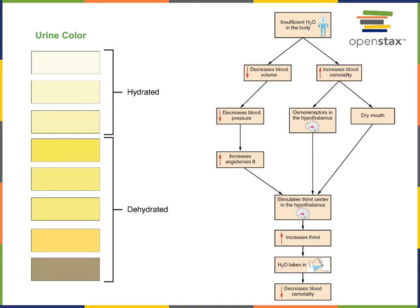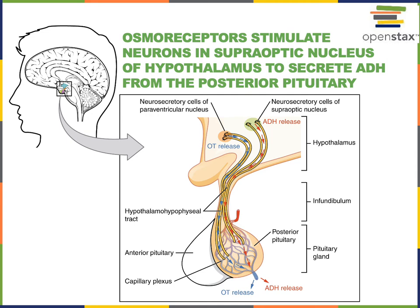When you're dehydrated, the color of urine becomes darker, and this is a result of the action of antidiuretic hormone. The neurosecretory cells in the supraoptic nucleus of the hypothalamus function as osmoreceptors and release antidiuretic hormone in response to high osmolarity — a high concentration of solutes when dehydrated. Antidiuretic hormone is released from the posterior pituitary gland and then acts to stimulate the kidney to increase water reabsorption.